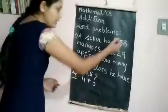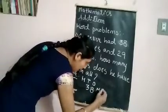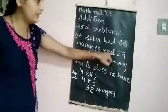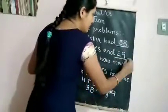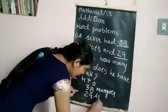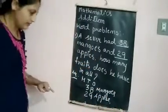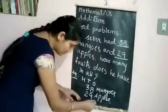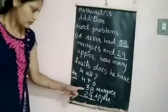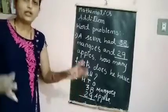Here, 38 mangoes are given. Write it in the tens and ones column: 38. And what is given next? 29 apples — write 29 below. Now you have to add these two numbers to get the total. 8 plus 9: 8 in your mind, 9 in your hand.